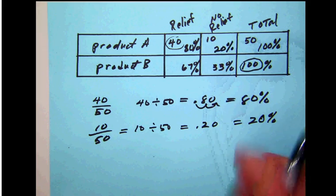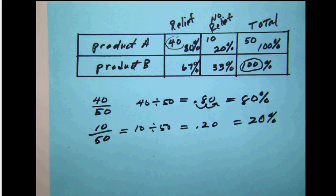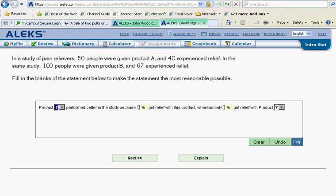Now that those percentages are calculated, we can go back and actually begin to answer the question. Let's go back and read the question and see what we have. It says 'Product blank performed better in the study.' So what do we mean by that?